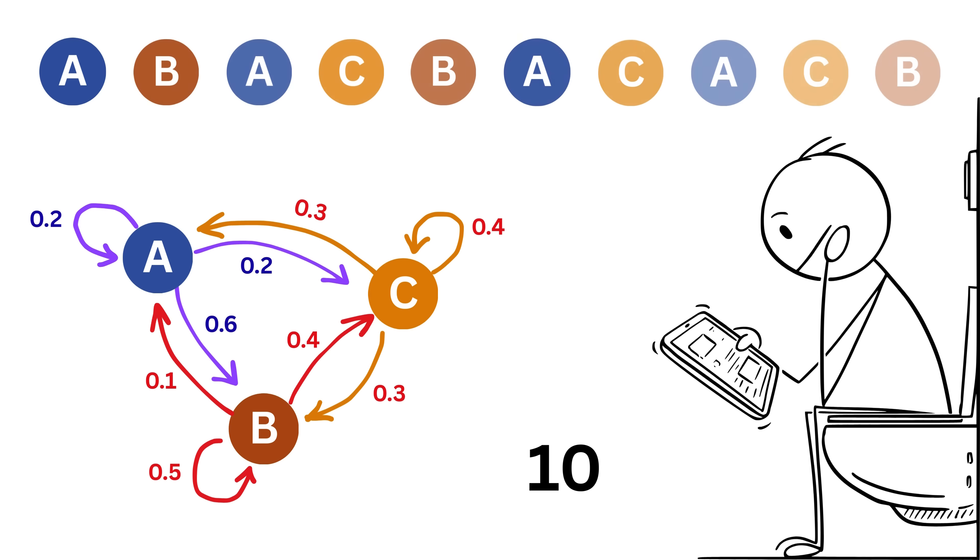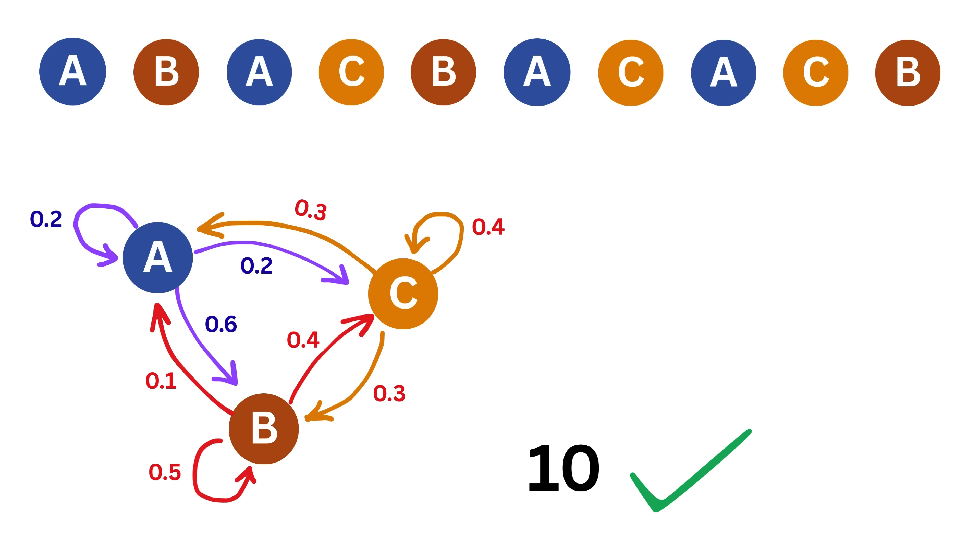At each step, the user moves from one page to another based on the transition rules we defined earlier. Once the 10 steps are done, we count how many times the user ended up on each page.